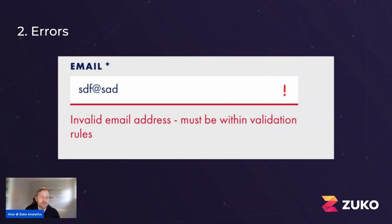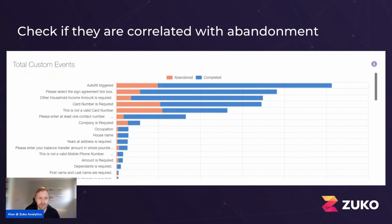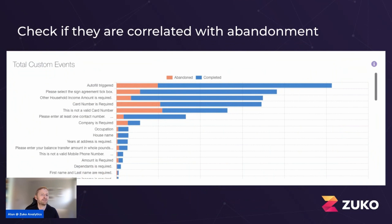You need to be a little careful because not all error messages are correlated with abandonment. Here's a Zico data screen of custom events — virtually all error messages — where you can see which ones trigger the most. The error message that triggers the most is 'please select the sign agreement tick box.' However, when we segment this and look at abandoned sessions only, we can see that actually the card number error messages are more important because they're the ones related to abandonment. A tick box is relatively simple — people often miss it, get an error message, just go back and tick the box. Always make sure you're checking this when looking at your error message data.